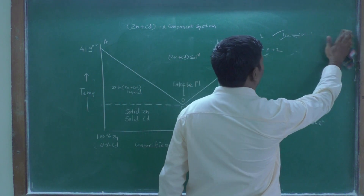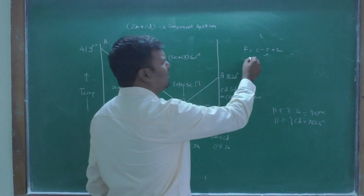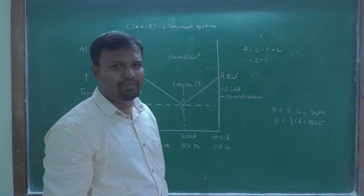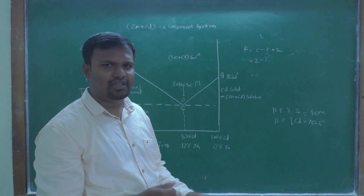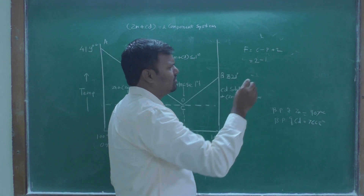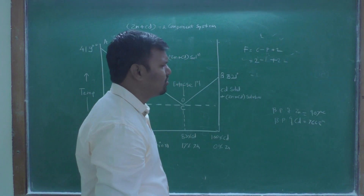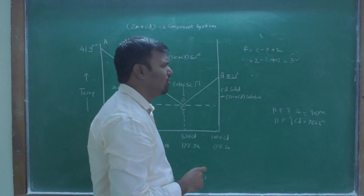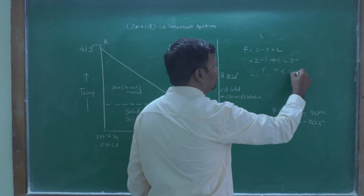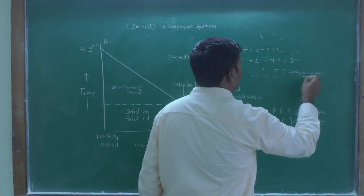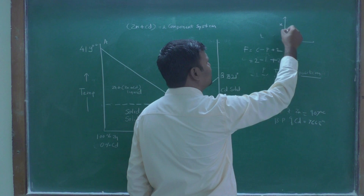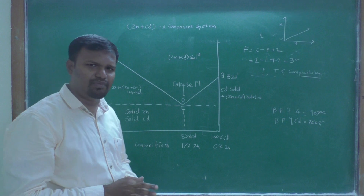For a two-component system, C = 2. With the minimum number of phases (one), the degree of freedom is three. Therefore, three variables — pressure, temperature, and composition — are required to describe this system. This means the phase diagram would be a three-dimensional graph, which is difficult to draw and study.